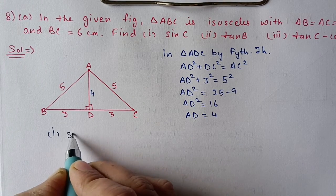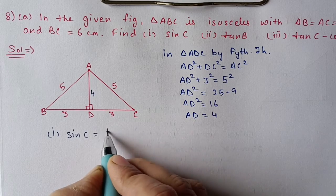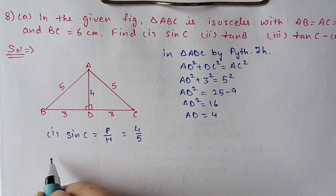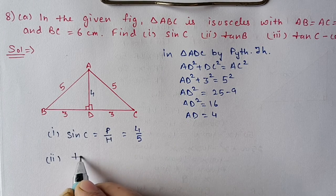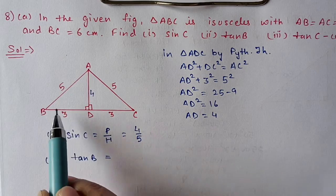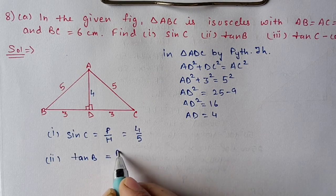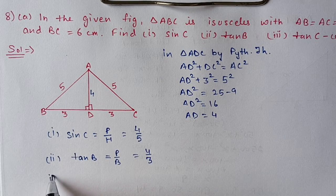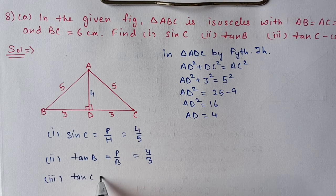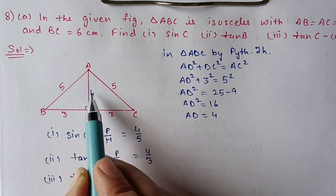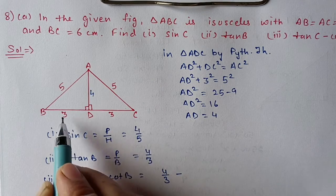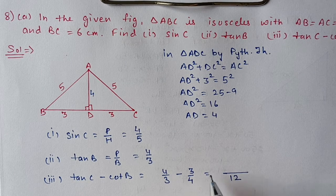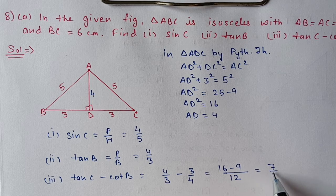Sin C: sin is perpendicular by hypotenuse. For angle C, perpendicular is AD which is 4 and hypotenuse is AC which is 5, so sin C equals 4 by 5. Tan B: perpendicular by base; for B, perpendicular is AD which is 4 and base is BD which is 3, so tan B equals 4 by 3. For tan C minus cot B: tan C equals 3 by 4 and cot B means base upon perpendicular which is 3 by 4. Taking LCM of 12: we get 16 minus 9, so the answer is 7 upon 12.